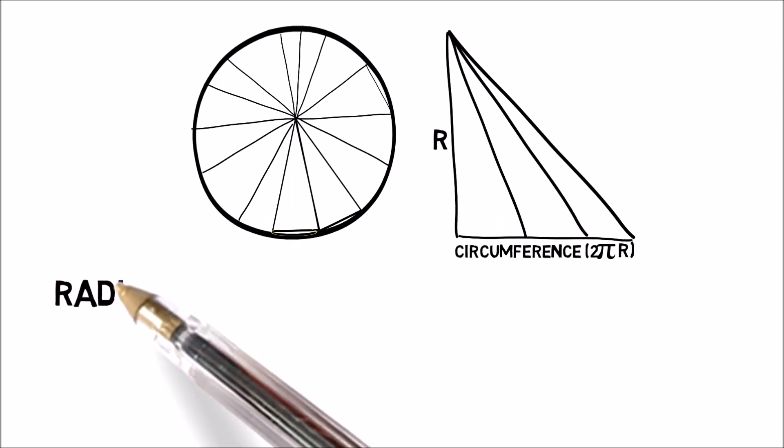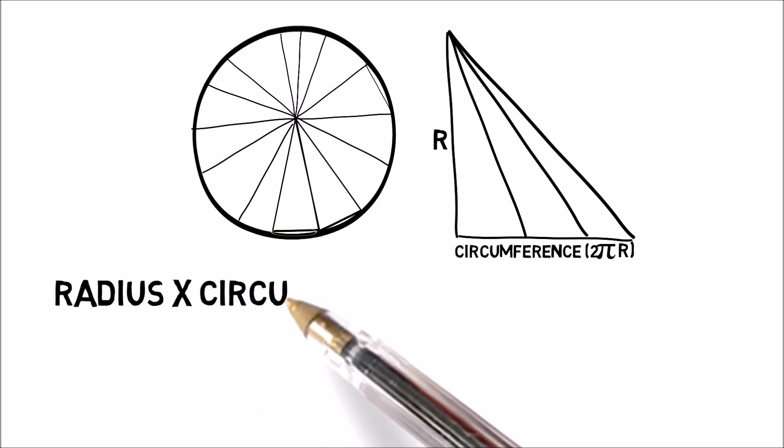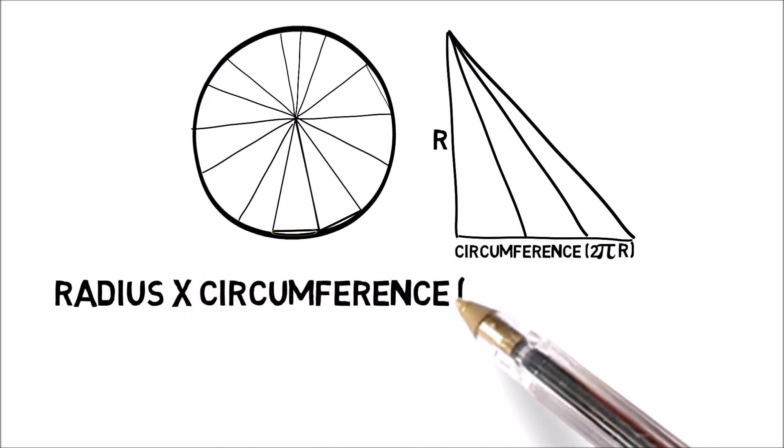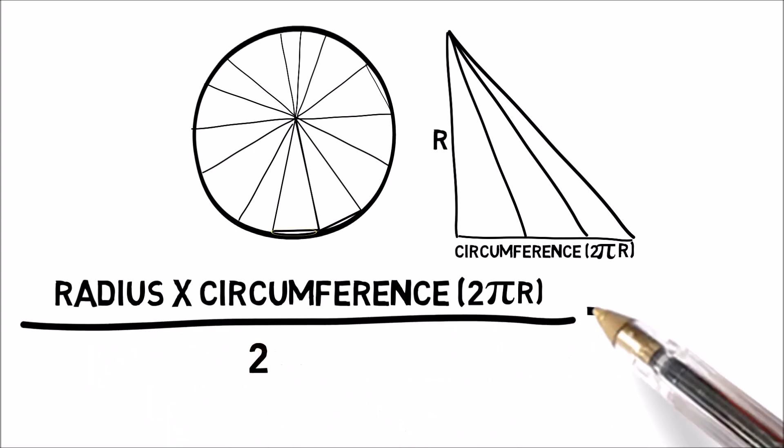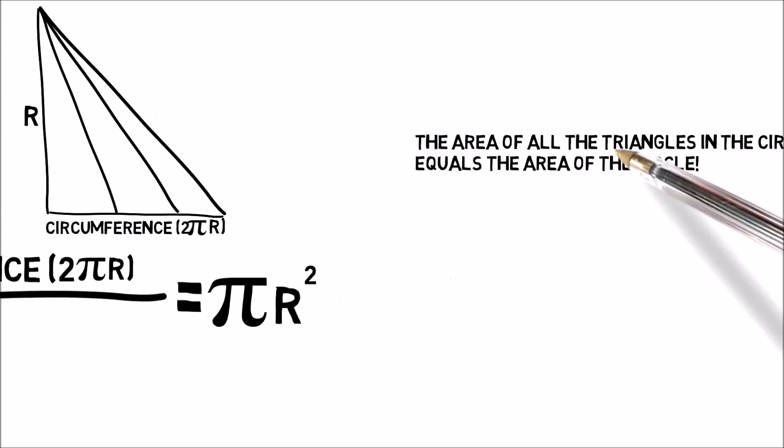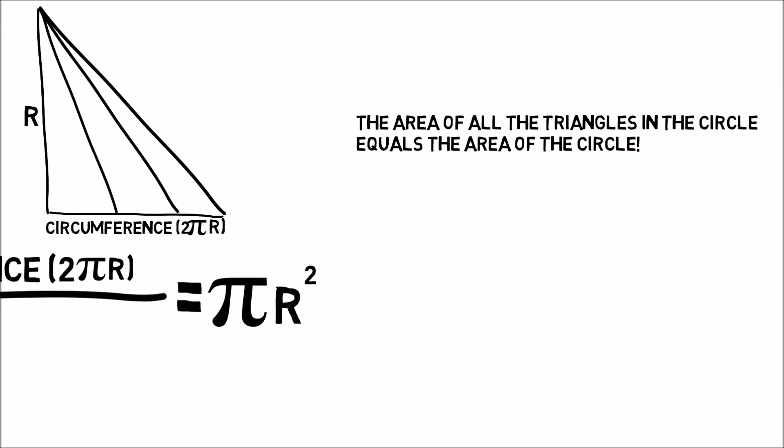First, take the height, the radius of the circle, and multiply it by the base, the circumference of the circle, 2 pi r. Divide that all by 2, and we get pi r squared. This is the area of the triangle. But it is also the area of the circle. The area of all the triangles in the circle equals the area of the circle.